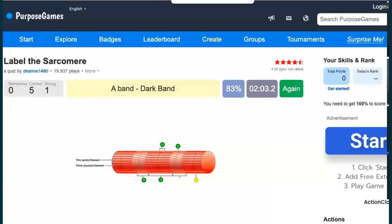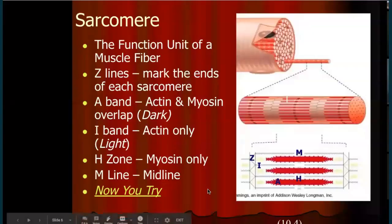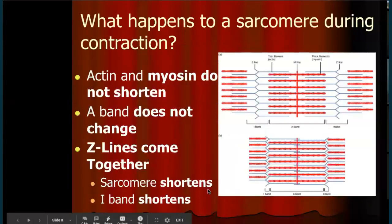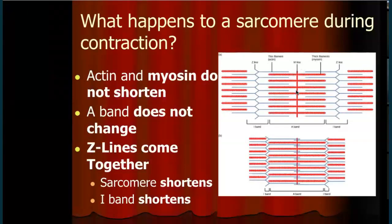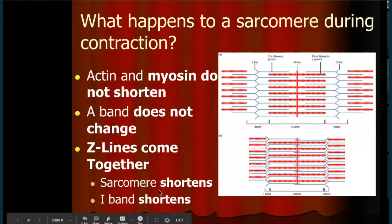You will label a sarcomere on the test — I even have actin and myosin on the final exam: which one is thick, which one is thin. In the relaxed sarcomere, notice there's a gap between the actin fibers and a big H zone — Z lines are kind of far apart. When a contraction occurs, the Z lines move inward, the actin filaments overlap, and the H zone pretty much disappears.